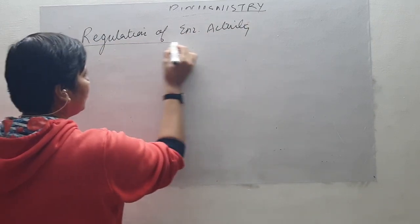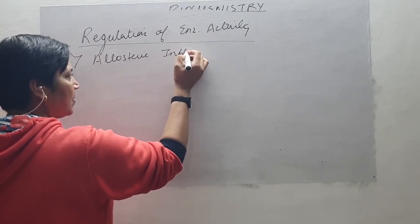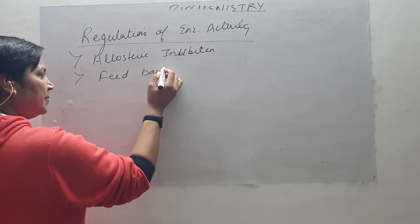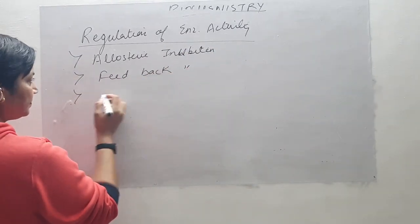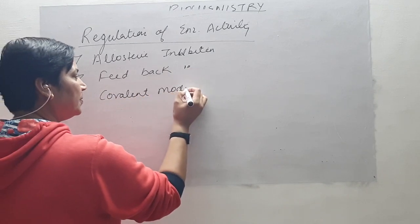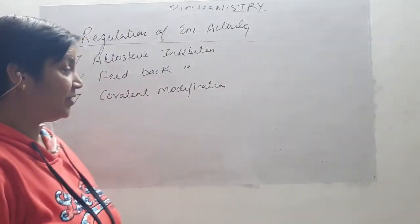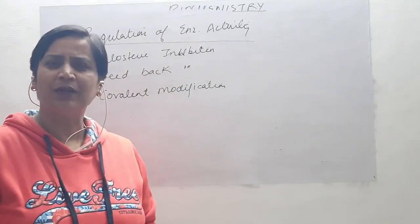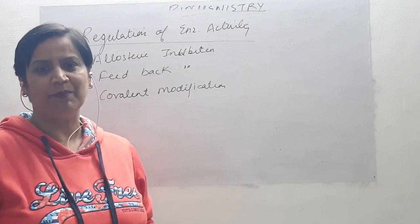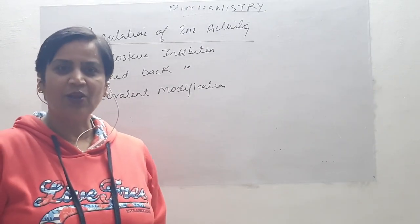The first mode of regulation is allosteric inhibition. The second mode will be feedback inhibition. The third mode will be covalent modification. Today in this class we discussed allosteric inhibition. In the next class we are going to discuss feedback inhibition and covalent modification. Try to grasp allosteric inhibition because it is very important. Thanks a lot, have a good day.